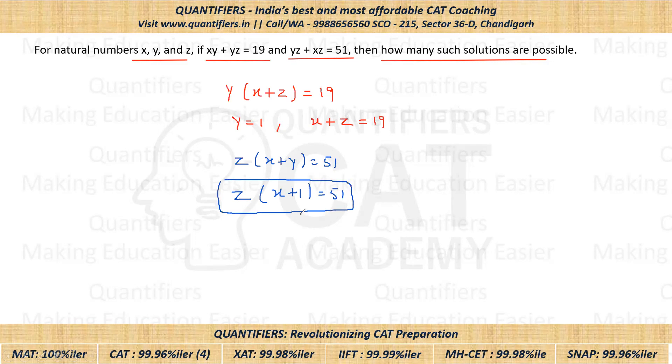Now students, obviously z will be a factor of 51, right? z will be a factor of 51. Now what is the minimum value z can have? The smallest factor of 51 is 1. So if I put z as 1...